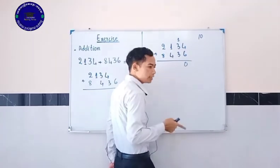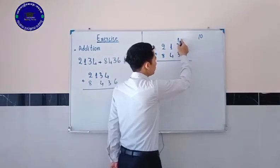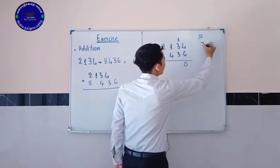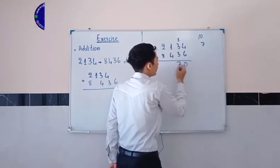Then when we add 1 and 3 and 3, we get 7. We write 7 under 6.